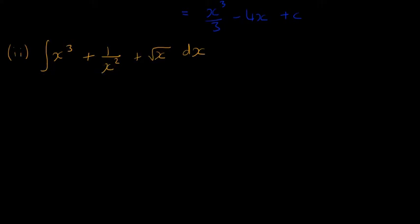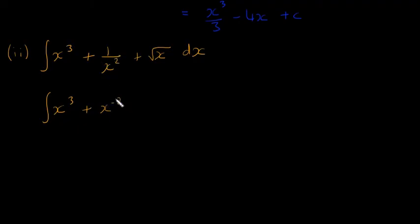Sticking with orange: the x cubed is going to stay as x cubed. For the next term, we have to write it using indices, so 1 over x squared becomes x to the power of minus 2. When you have x to the power of minus 1 that's just 1 over x, and so on — that's indices from algebra. Then for the square root, there's an indices rule as well: it's going to be x to the power of a half. Once it's in this form, it's fine to integrate.